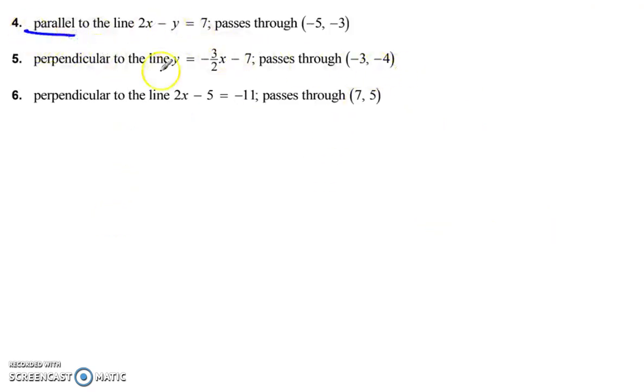Parallel. Parallel lines have the same slope. Now, first, I have to find the slope. That means put this in slope-intercept form, move the 2x to the other side. It becomes negative. We get negative y is equal to negative 2x plus 7. Change all the signs. y is equal to 2x minus 7. The slope here is 2.